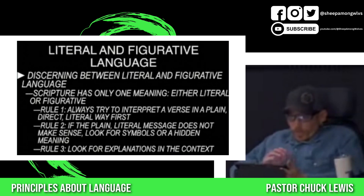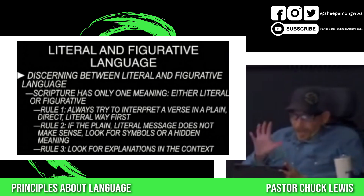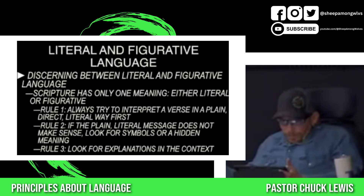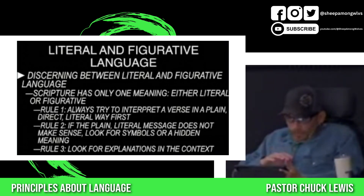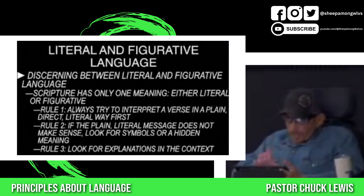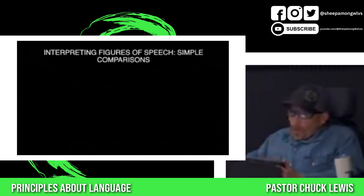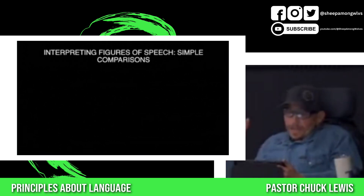We are to interpret literal language in a direct way and discern the symbols in figurative language, using the three rules to interpret verses. Literal language is plain, direct, has no hidden meaning, so it's the easiest to interpret. Figurative language is harder — it uses symbols and has hidden meanings, so we must spend more time studying it. Now let's look at some simple comparisons in interpreting figures of speech. We're going to look at four kinds of comparisons that all use figurative language: similes, metaphors, anthropomorphism, and personification.